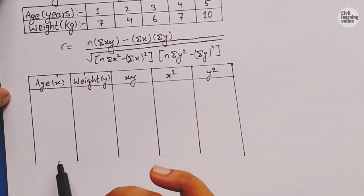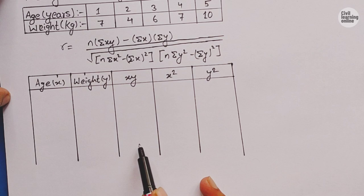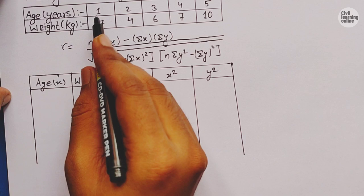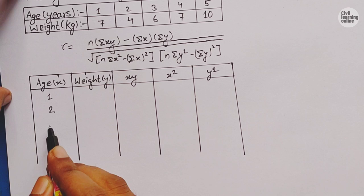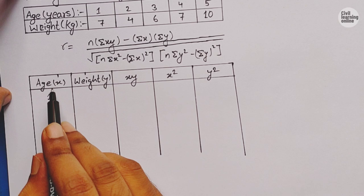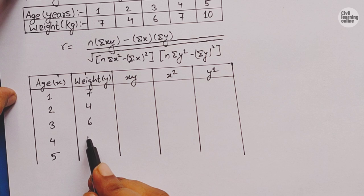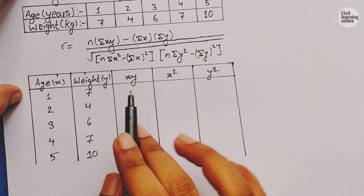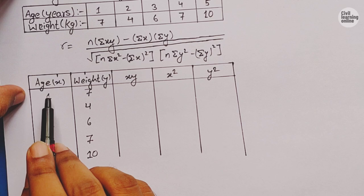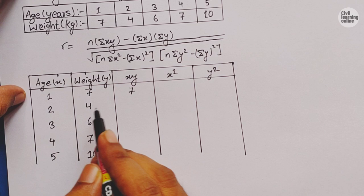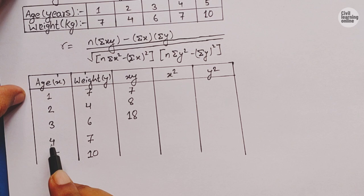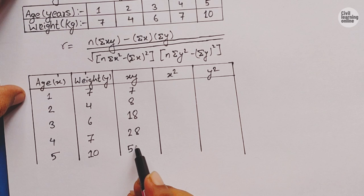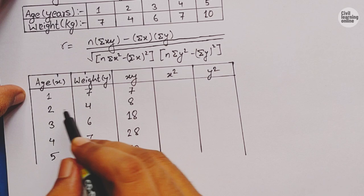We will need the values of summation x, summation y, summation xy, x², and y². The table has separate columns for each. The x values are 1, 2, 3, 4, 5, and the corresponding y values are 7, 4, 6, 7, and 10. Now we calculate xy by multiplying each pair: 1×7=7, 2×4=8, 3×6=18, 4×7=28, and 5×10=50.